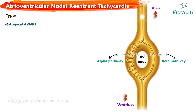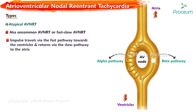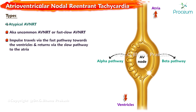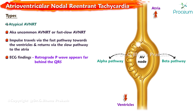Atypical AVNRT, also described as uncommon or fast-slow AVNRT, is where the impulse travels via the fast pathway towards the ventricles and returns via the slow pathway to the atria. The retrograde P-waves appear far behind the QRS. Only about six percent of all AVNRT patients are diagnosed with atypical AVNRT. The remaining cases are diagnosed with a form of AVNRT that is even more rare.